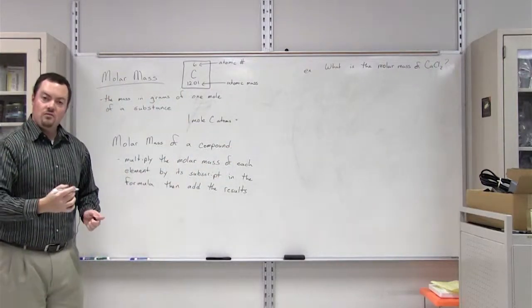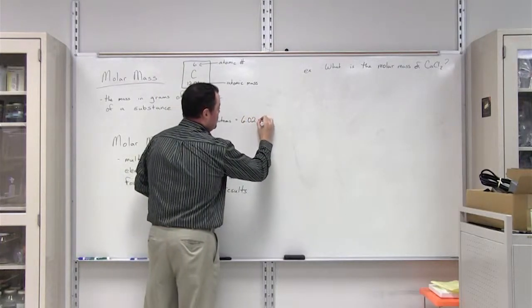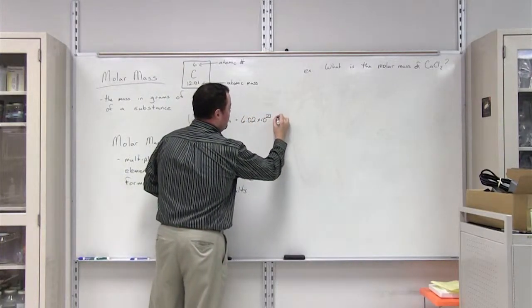Or by Avogadro's number, we know that one mole of carbon atoms is the same as 6.02 times 10 to the 23rd carbon atoms.